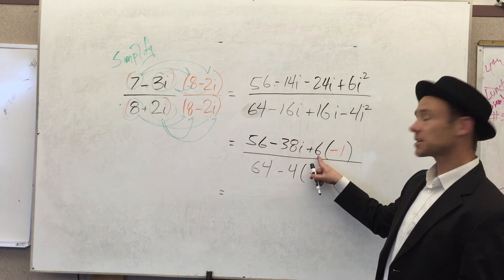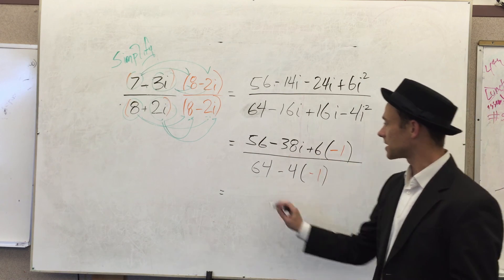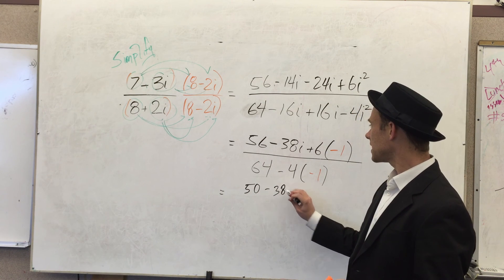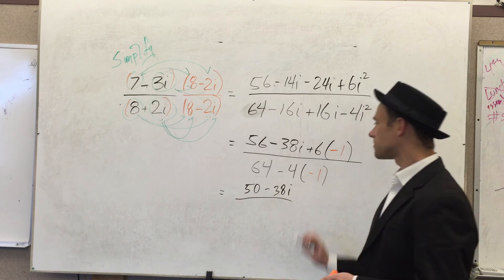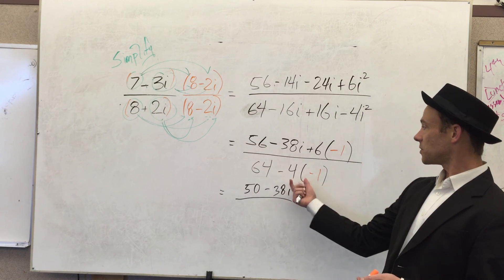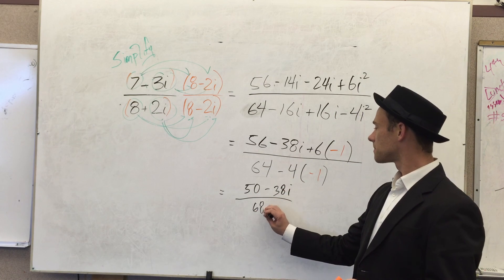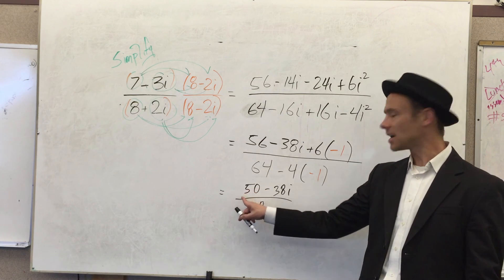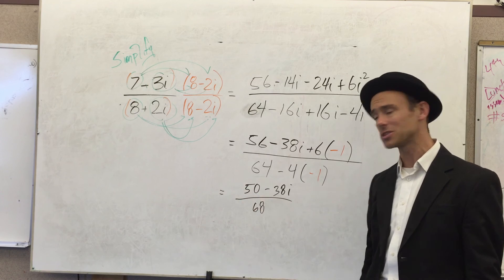Looking really good here. So I just have to tidy this up a bit. 56, this is going to become minus 6, right? Because I'm going positive times the negative, it's going to give me 50, minus 38i, divided by 64 plus 4 is 68. Which is a pretty good solution.